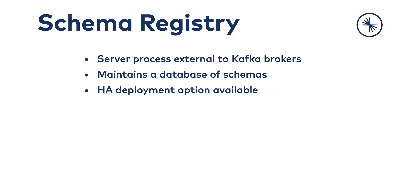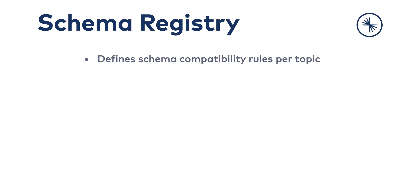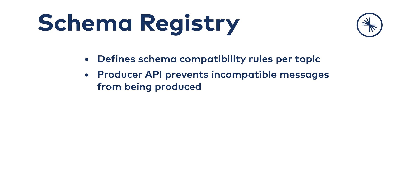Schema Registry can be run in a redundant high availability configuration, so it remains up if one instance fails. It's also an API that allows producers and consumers to predict whether the message they're about to produce or consume is compatible with previous versions. When a producer is configured to use the schema registry, it calls — at produce time — a REST endpoint at the schema registry. The producer presents the schema of the new message. If it's the same as the last message produced, the produce may succeed. If it's different but matches the compatibility rules defined for the topic, the produce may still succeed. If it's different in a way that will violate the compatibility rules, the produce will fail in a way that the application code can detect.